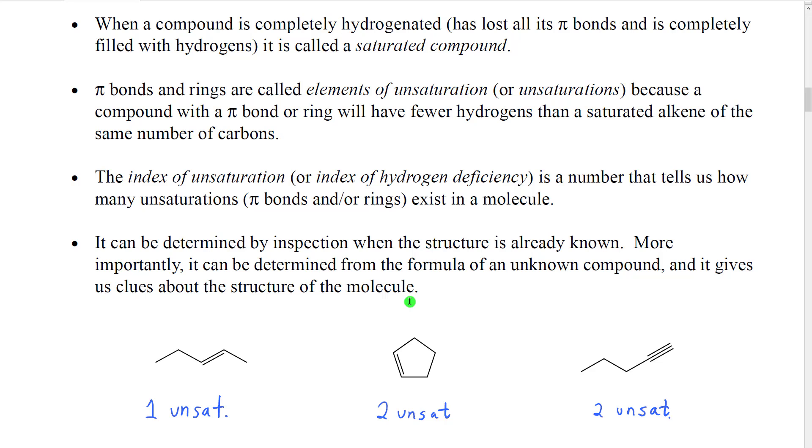We could either look at the formula where for every unsaturation there would be two missing hydrogens, or we could look at the structure because we know that every carbon-carbon double bond would be one unsaturation, every ring would be one unsaturation, and as we're going to see a triple bond, because it contains two pi bonds, would be two unsaturations.